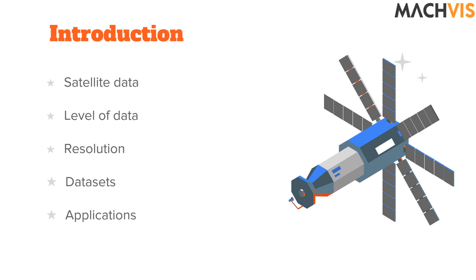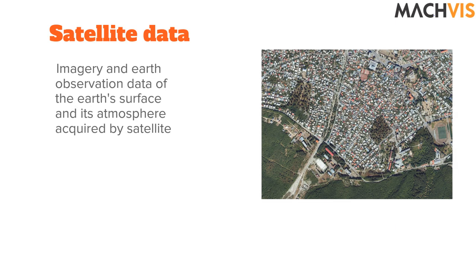First, we look at satellite data. Satellite data is defined as the data that is acquired by Earth-revolving satellites. Another term you may come across is aerial data or aerial imagery. Aerial imagery is the imagery acquired by aeroplanes, UAVs, or balloons from height down to the lower ground.